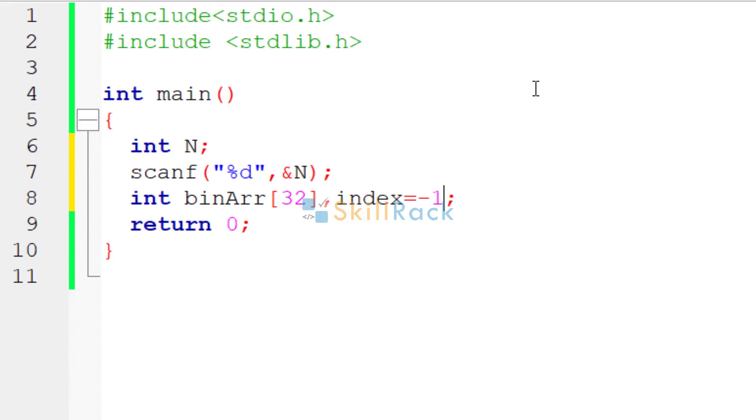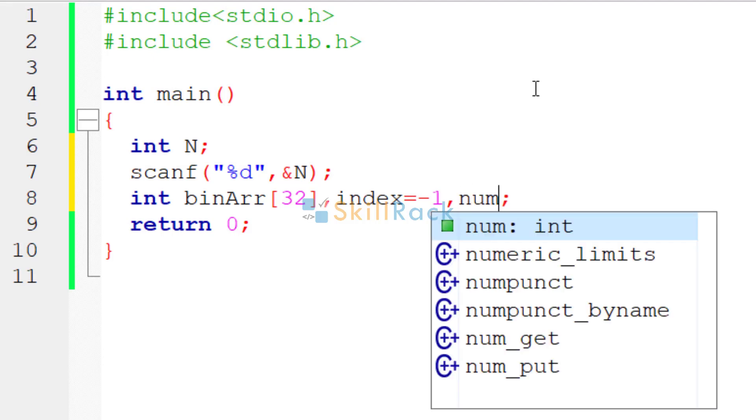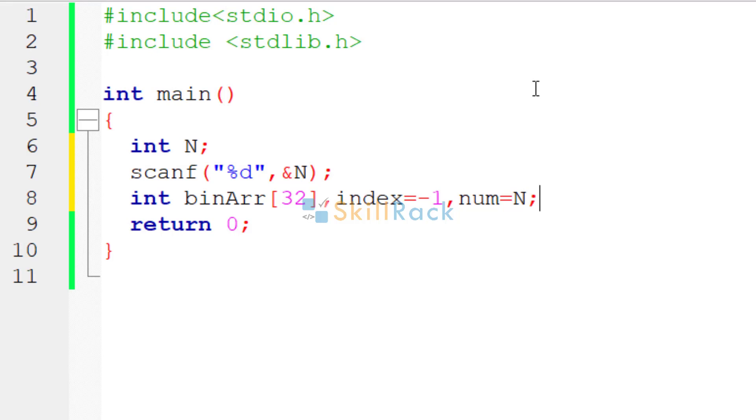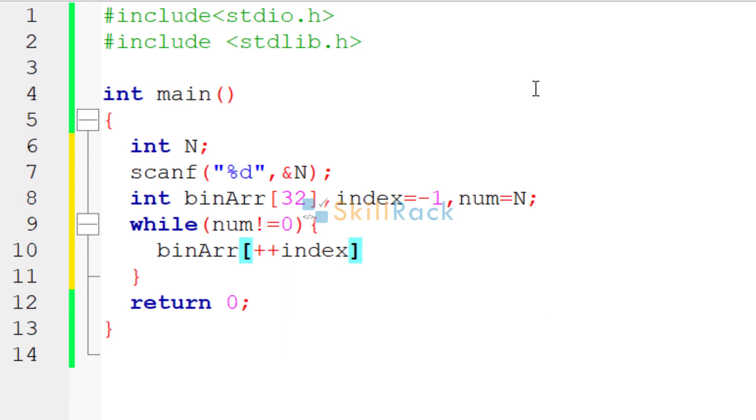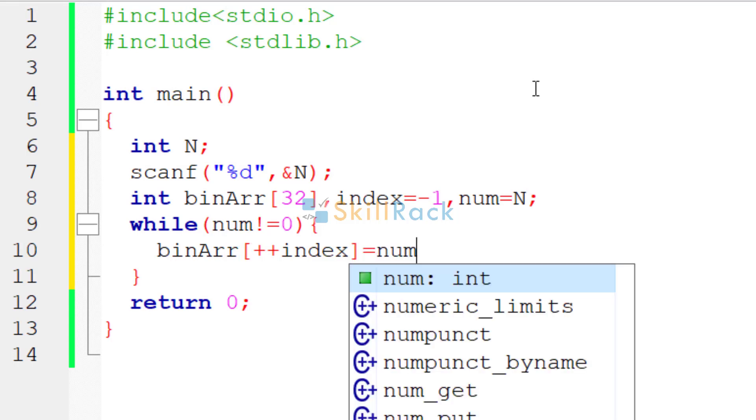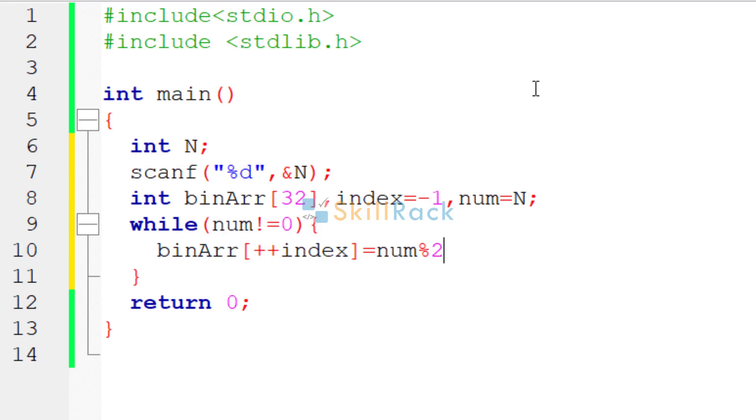We can also create a backup because we will be modifying the value of n. So we will say num which acts as a backup. We will modify only num and n value will be untouched. So now we say while num not equal to 0 because we have to keep dividing and populate the remainders when divided by 2 in the binary array. So bin array we use preincrement operator because we have mentioned the index as minus 1. So minus 1 must become 0 when storing the first value. We say num modulo 2. Then num slash equals 2 because num is divided by 2. So at the end of this while loop the binary representation will be stored in bin array.